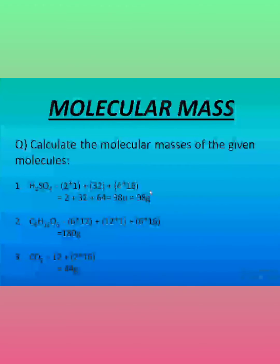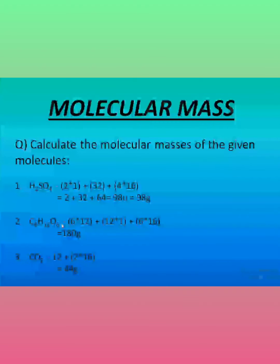So the answer is 98 grams — it is a gram molecular mass. Similarly, the second example is C6H12O6, which is glucose. In this case, we add 6 carbon atoms, 12 hydrogen atoms, and 6 oxygen atoms. So it is 6 × 12 plus 12 × 1 plus 6 × 16, and the answer is 180 grams.